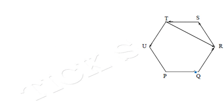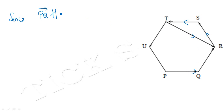Let this be the required regular hexagon. We know that PQ is not parallel to TR, where TR is the resultant of RS and ST. Using this, we are going to verify Statement 1.